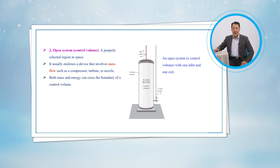Both mass and energy can cross the boundary of a control volume. A large number of engineering problems involve mass flow in and out of a system, and therefore are modeled as control volumes. A water heater, a car radiator, a turbine, and a compressor all involve mass flow and should be analyzed as control volumes instead of as control masses.